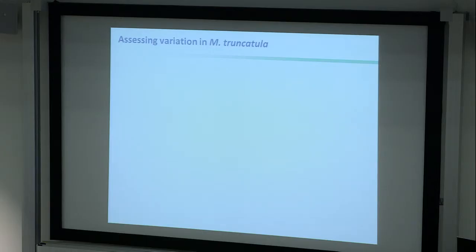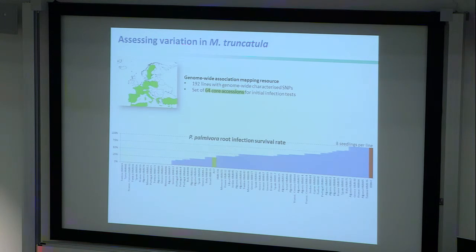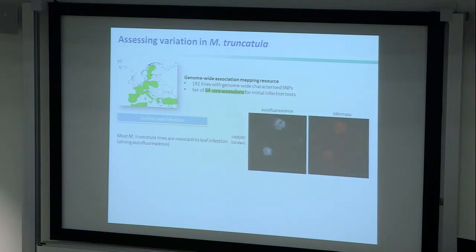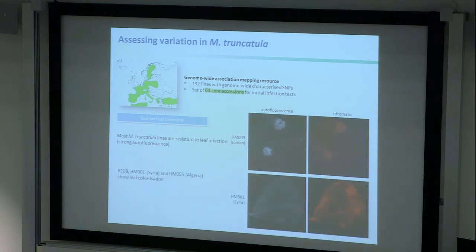This is one way of identifying general principles of accommodation and penetration, exploiting a well-studied model system. We can also use natural variation: Medicago is very good for this, with 192 fully genotyped accessions. We screen lots of varieties, find a lot of variability, and will perform GWAS on them. Phytophthora palmivora also infects leaves, and we can find accessions that completely permit leaf colonization while the majority is completely resistant — giving potential to use this system above ground as well.